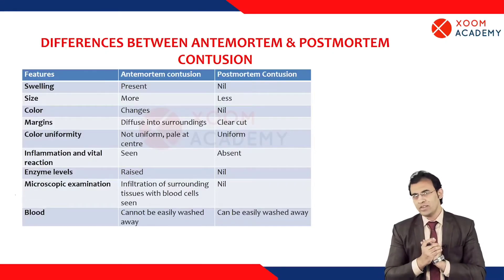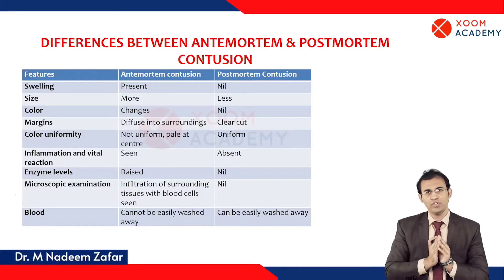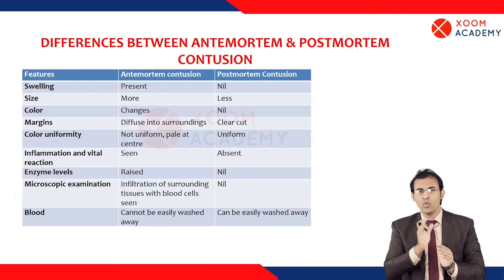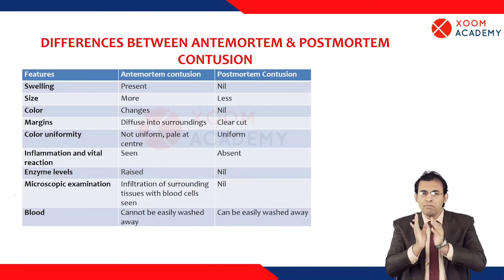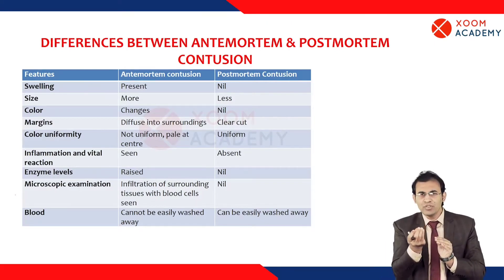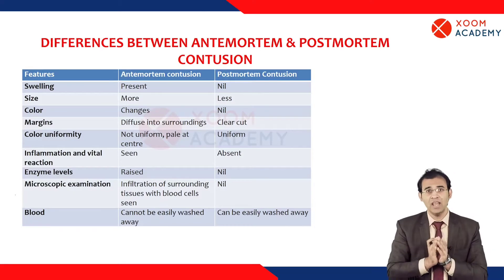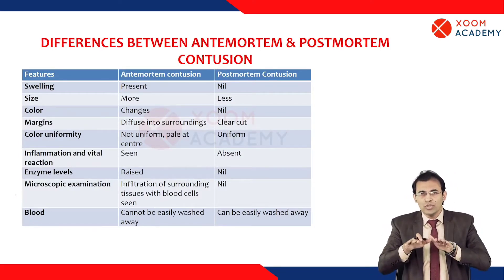Now we are going to understand the differences between ante-mortem contusion and post-mortem contusion — how we determine whether a blunt injury occurred before or after death, and whether a contusion formed when the person was alive or after death. We can do different examinations to establish this.